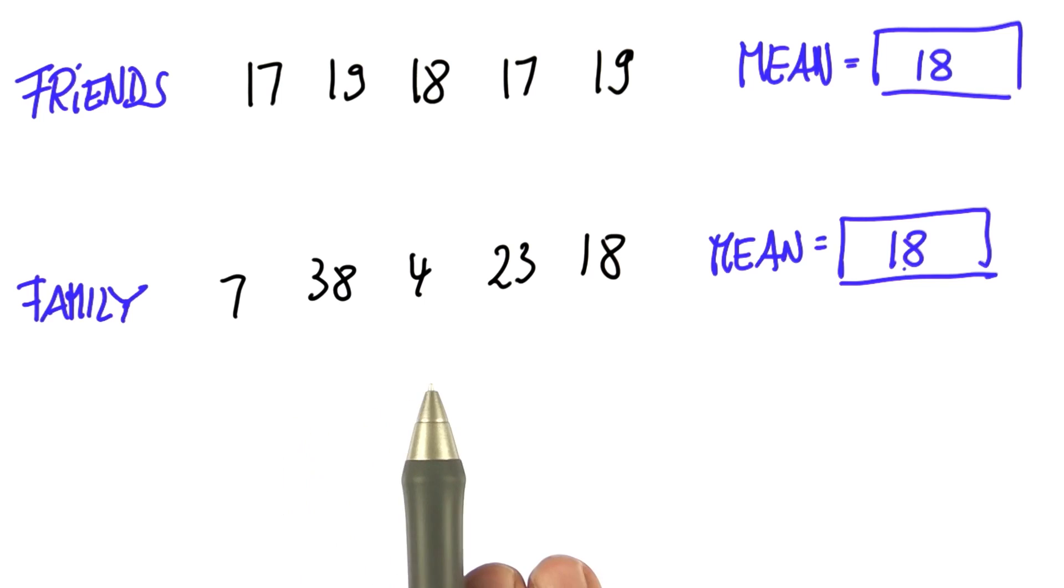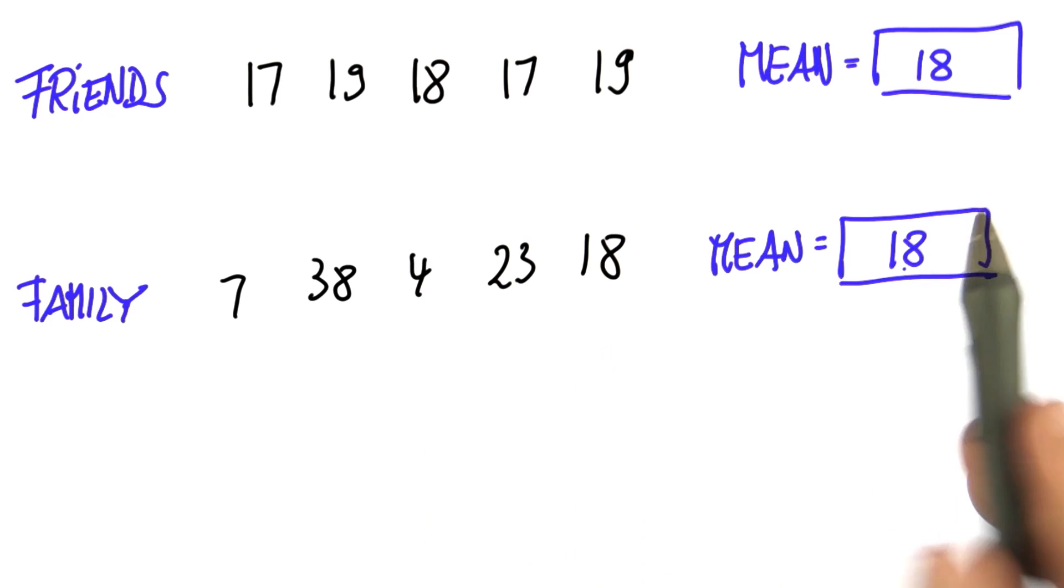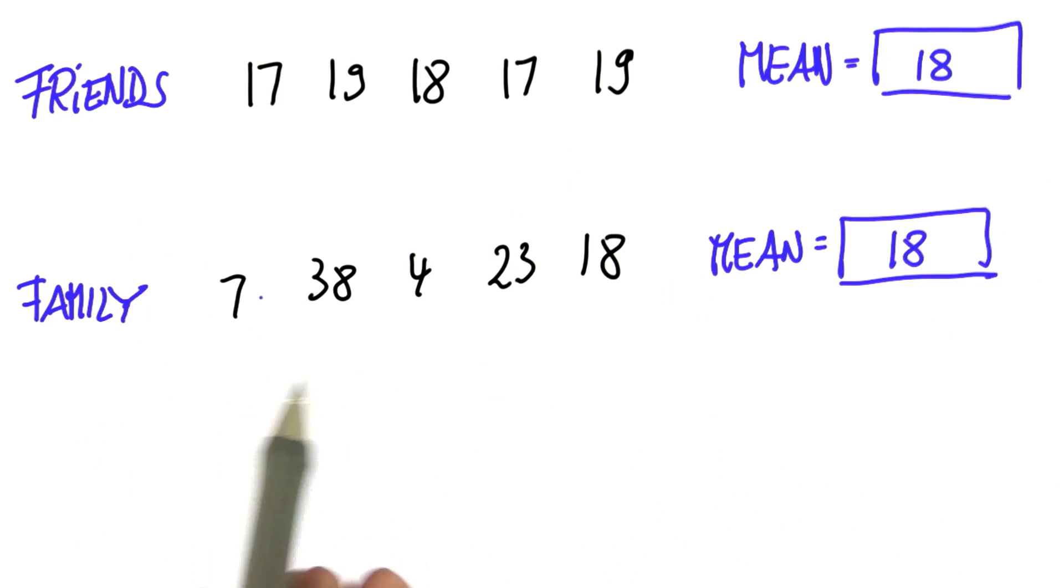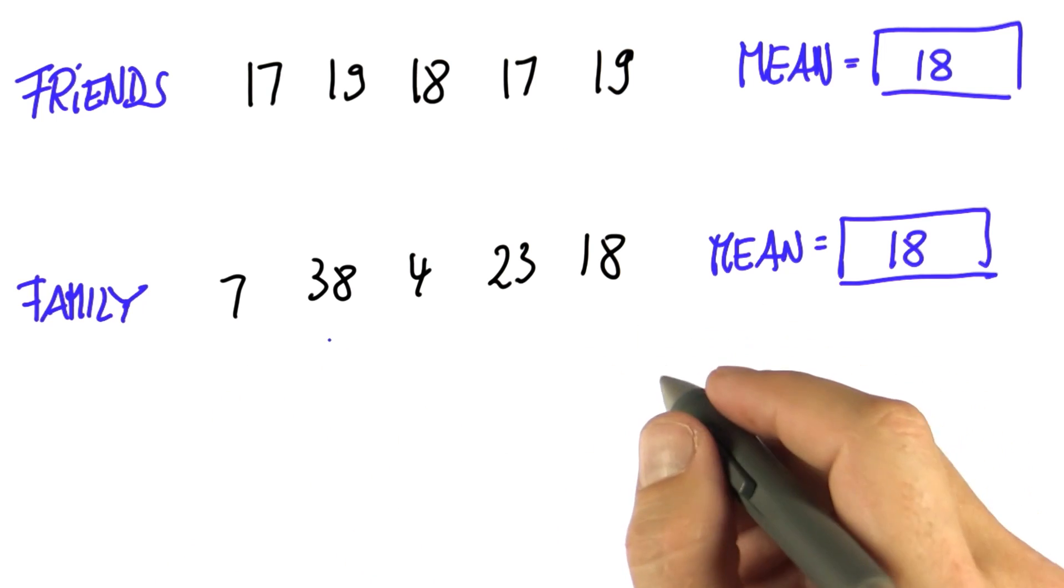I would say the mode, the median, or the mean don't really capture the spread of the data. What does capture the spread is called the variance.